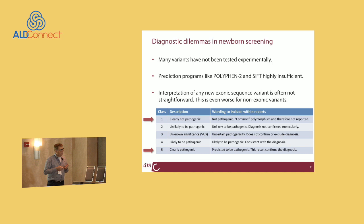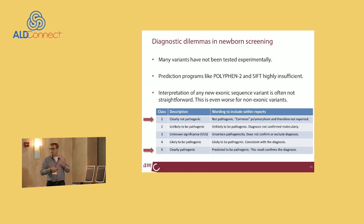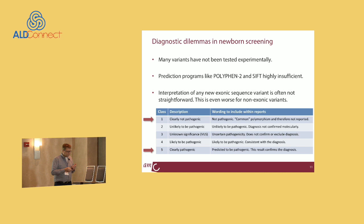Clinical geneticists have come up with a five-class classification system. Only class 1 and class 5 are truly helpful: class 1 says it's clearly not pathogenic — a proven harmless change — and class 5 says this is a truly proven pathogenic mutation. But in the three intermediate classes, if you receive a report with class 2, 3, or 4, it doesn't help you.